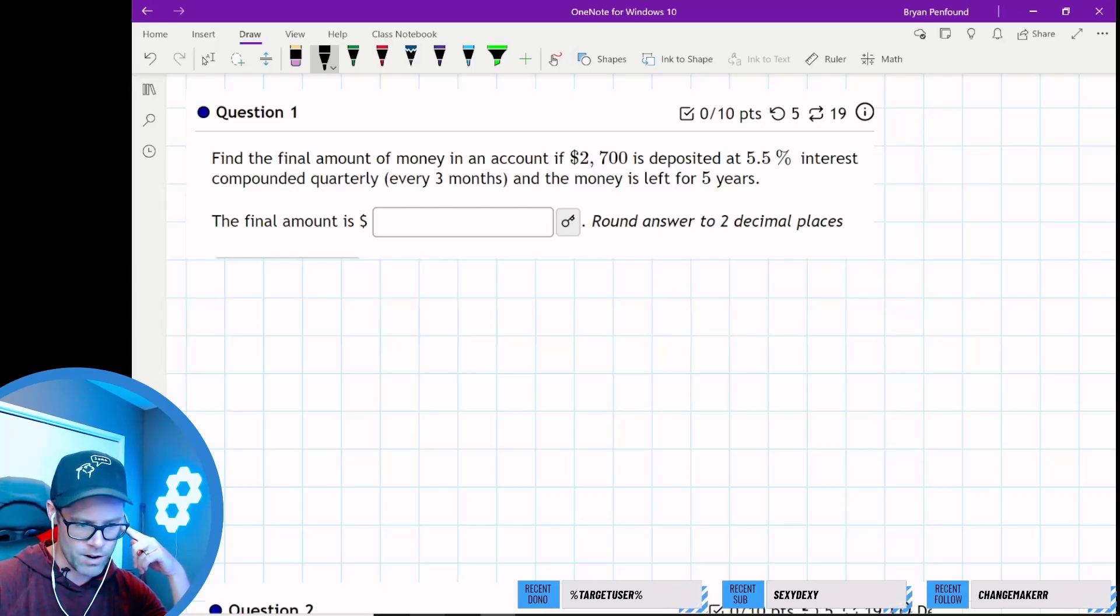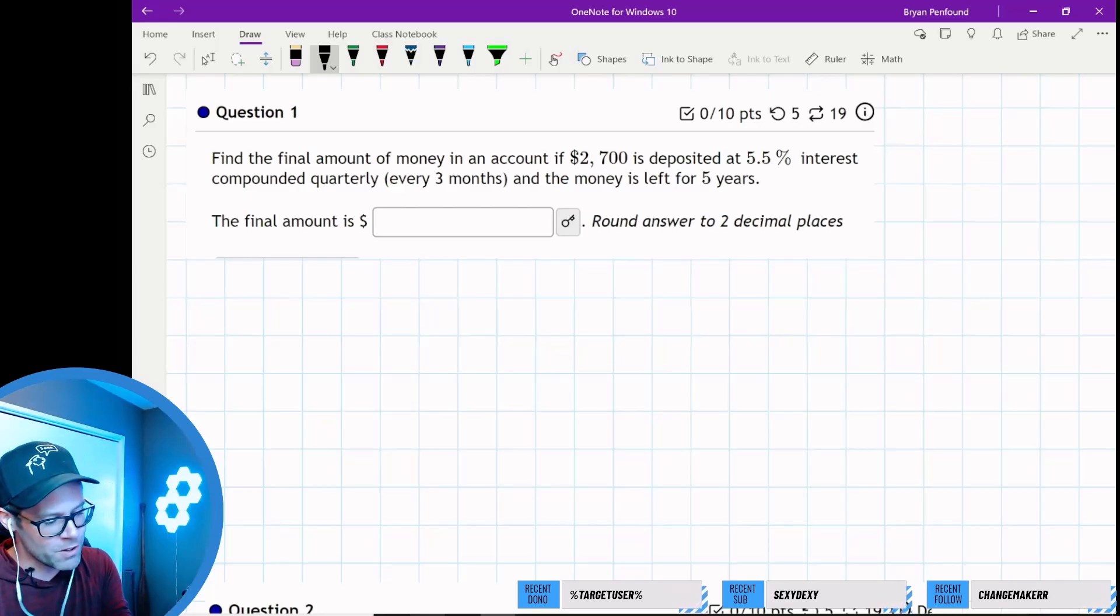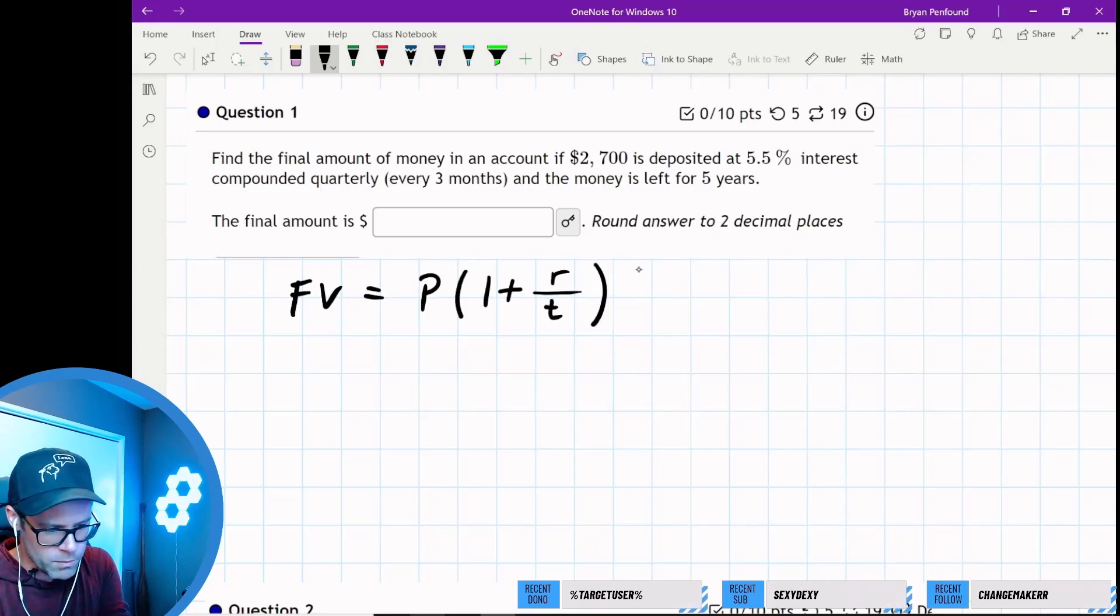The future value of money with compound interest should be the principal amount times 1 plus the periodic interest rate, which is the rate over some kind of time component, and then we need to raise that to the number of compounds.